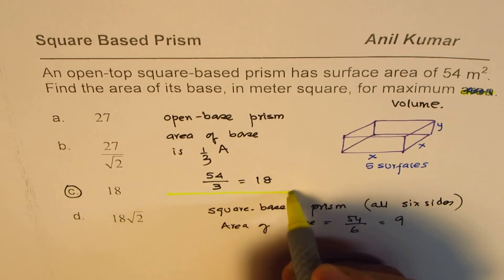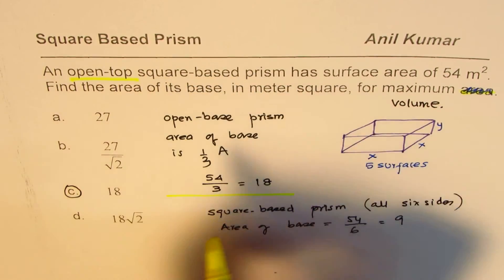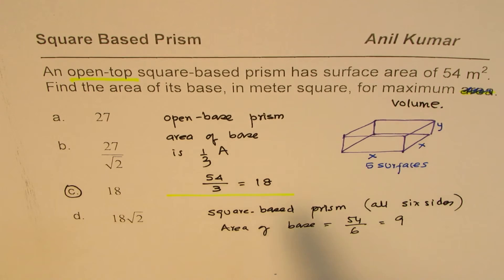This is open-top square-based prism, so in that case area of the base is one-third. That is much wider than a closed-top prism. It's important to remember this—that will help you to answer such questions fast.